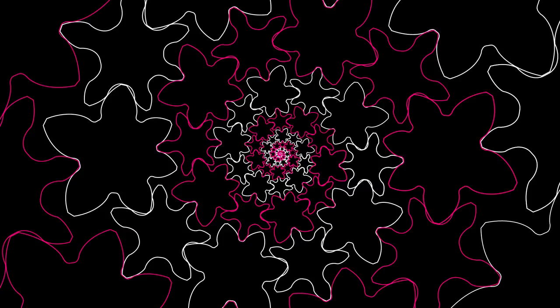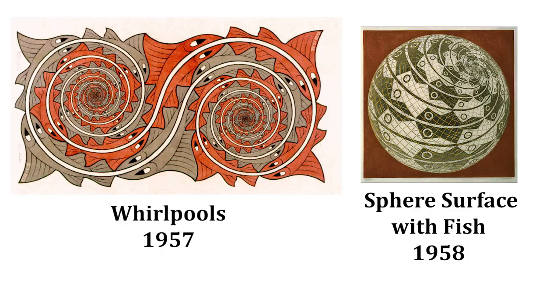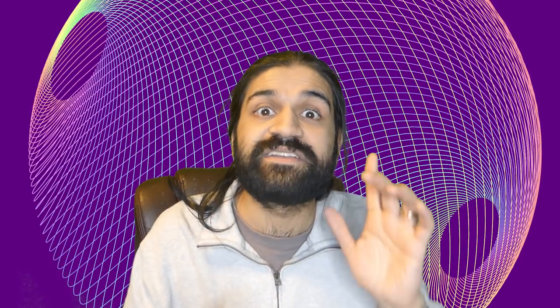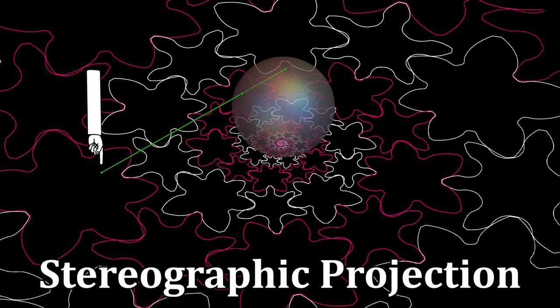Moving back to gears — the process I just described is what I used to get this picture, and I think it looks pretty cool. However, we can go further. Take a look at these other two pieces by Escher — feel free to pause. It turns out, with all the work we've already done, it's not too hard to replicate this effect as well. Start by taking the picture we've already made and putting it on a plane, then place a sphere right on top of the picture at the origin. The first thing we're going to do is transfer our picture onto the sphere using a method called stereographic projection.